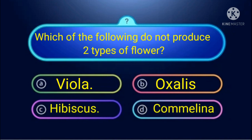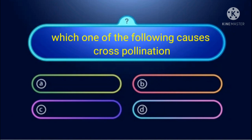Viola, oxalis, and comelina all produce both types of flowers — completely closed flowers and open flowers in which male and female reproductive systems are exposed. However, in the case of hibiscus, we cannot see two types of flowers — both open and closed. Therefore, the right answer is hibiscus.